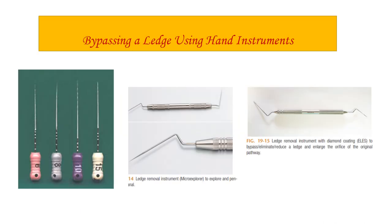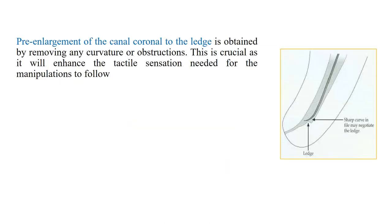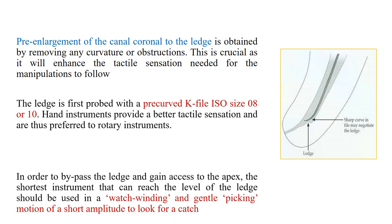To bypass a ledge using hand instruments, you can use smaller K-files — number 6, 8, 10, or 15 K-files. There are also dedicated ledge removal instruments: the micro explorer and the ELIAS instrument, which has a diamond coating. All these hand instruments are used to bypass or eliminate the ledge and enlarge the orifice of the original canal.